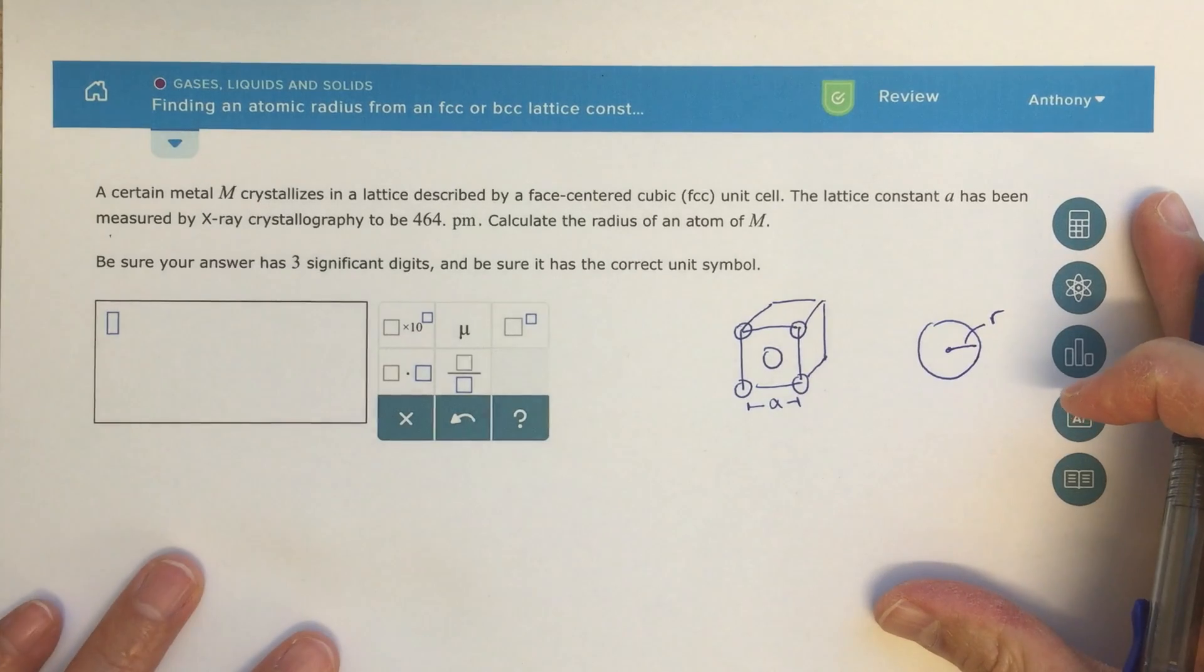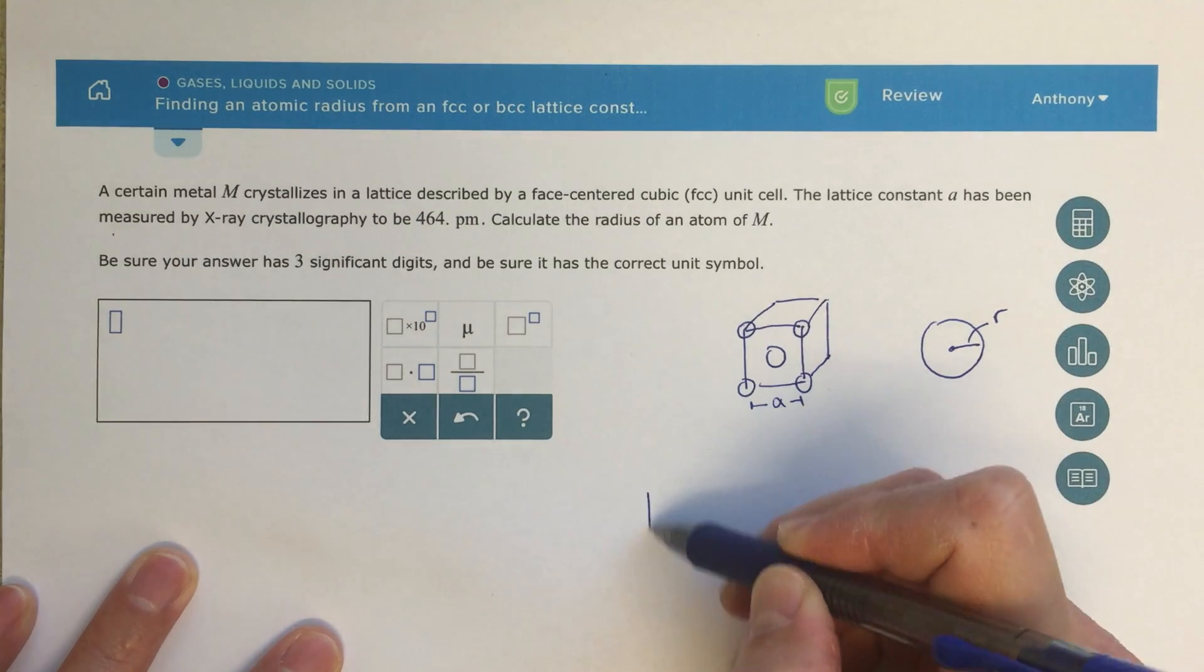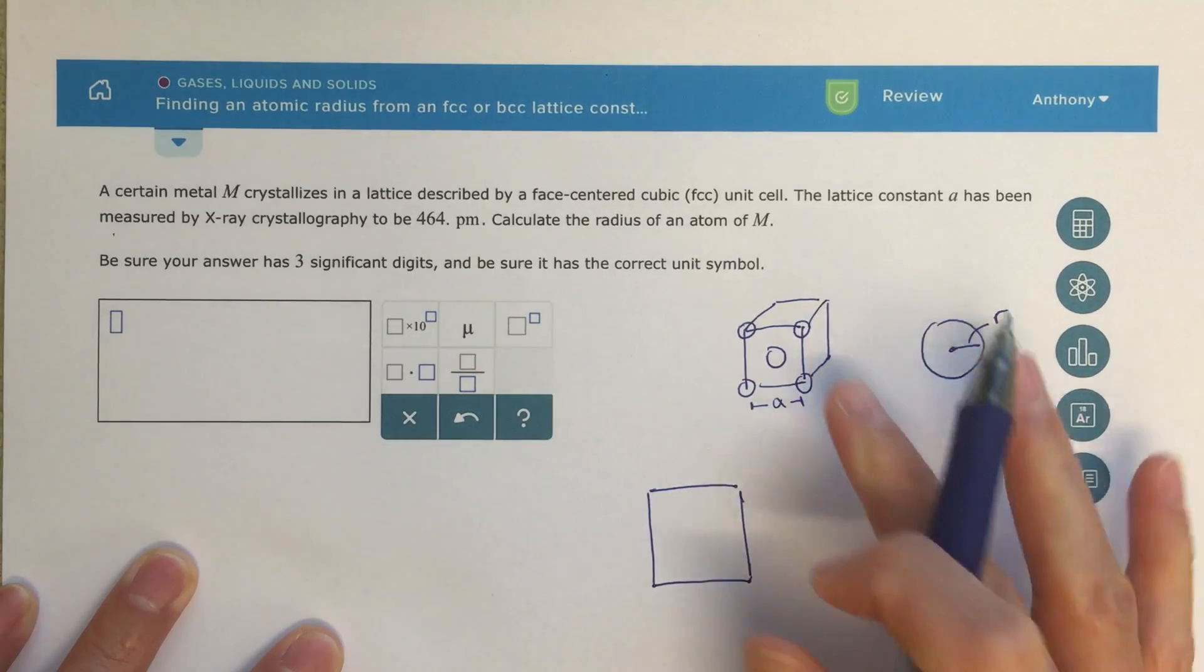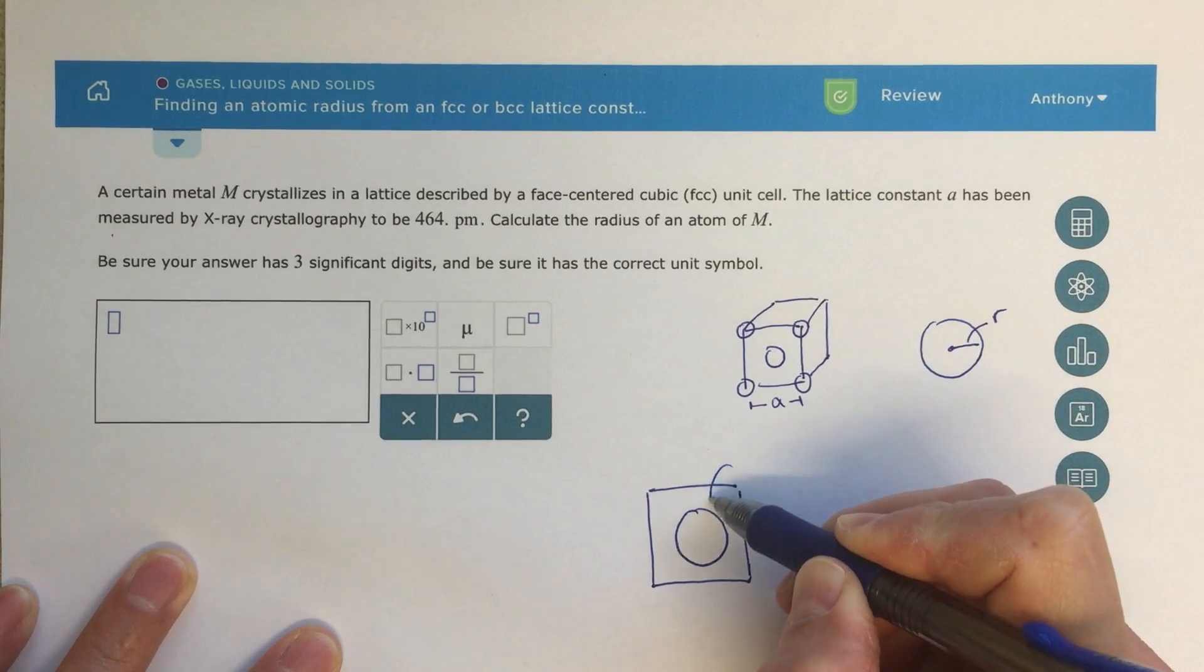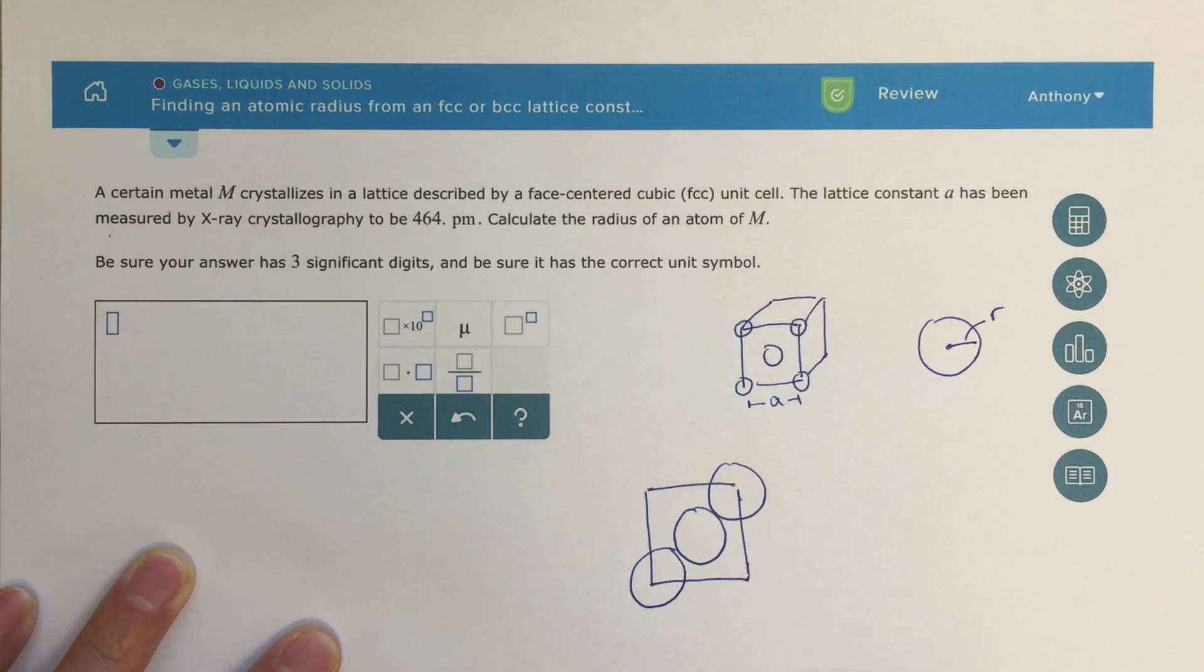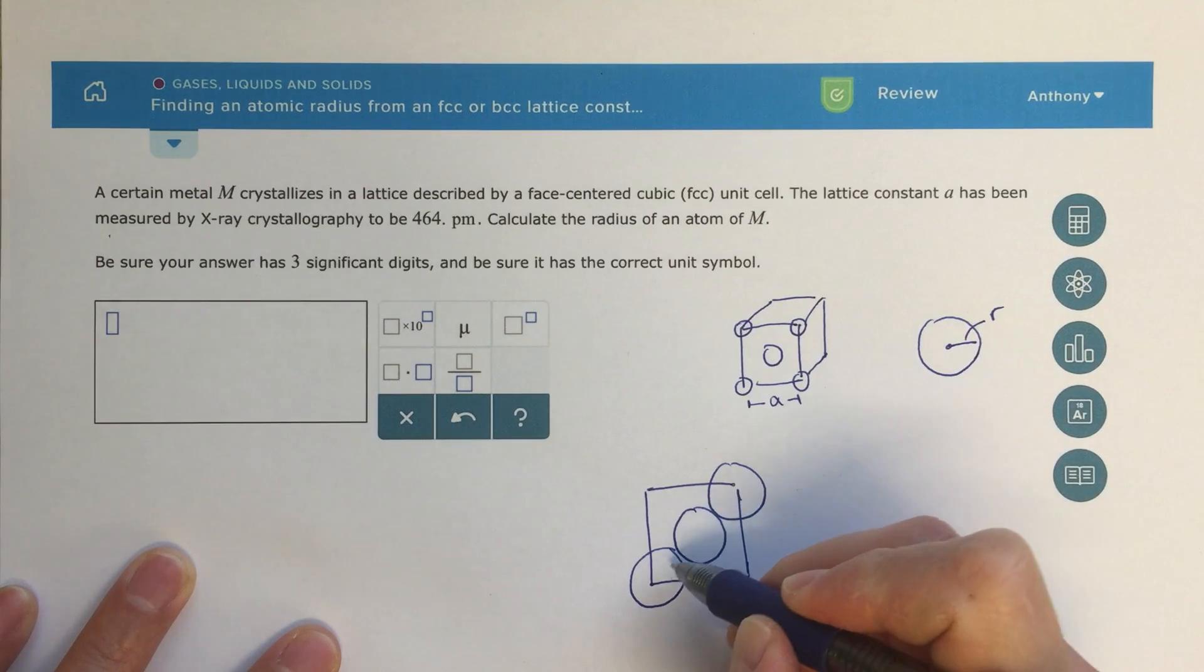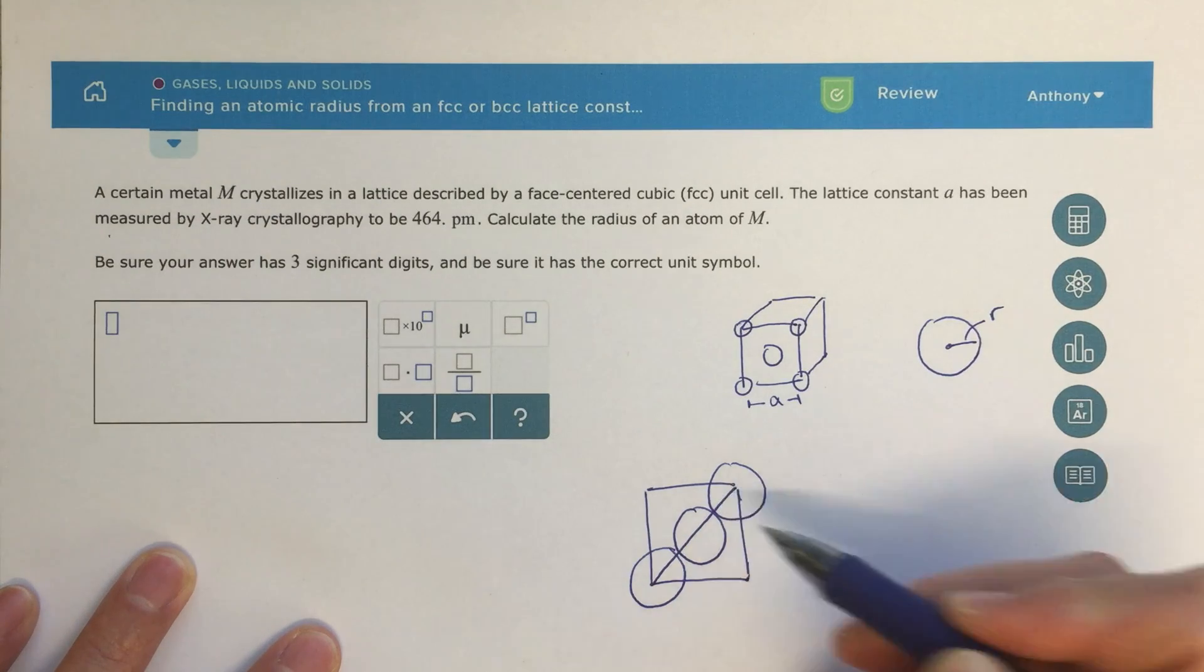This is really a geometry problem, not really related to chemistry, it's definitely more geometry. The first picture I would draw is looking at one of these faces, and then I'm going to draw three atoms in that line. These atoms will be touching each other more or less, and if I draw a diagonal line through them, I've got half of an atom, so this would be one radius here, two radii here, and then one more here.